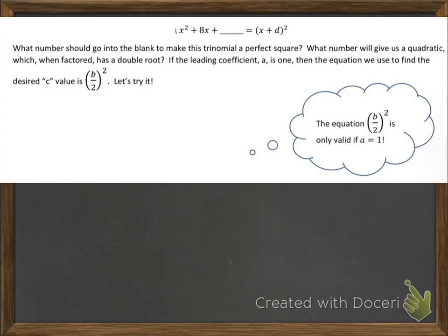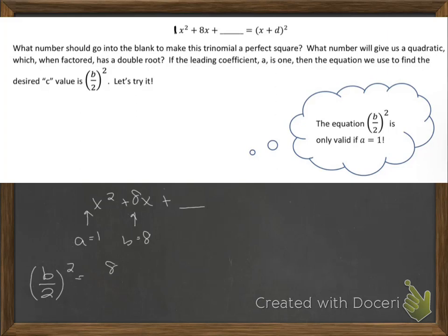By a, I mean the number in front of x squared. As you can see, the number in front of x squared is already 1, so we can use this equation. We have x squared plus 8x plus something. Right now a is equal to 1 and b is equal to 8. So what we need to do is find b over 2 and then square it. I have 8 over 2, quantity squared. Well, 8 over 2 is 4, and 4 squared is 16. So the magical number here that is going to complete the square is 16.